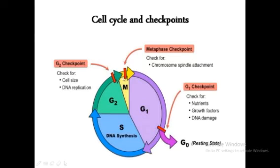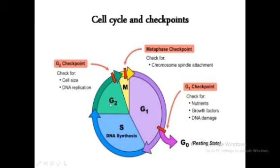From the picture, we can see that cell cycle seems like a continuous pathway, so anything can go wrong. There are some checkpoints that make sure there is no problem along the way. There are three checkpoints: the G1 checkpoint makes sure that the cell entering the cell cycle doesn't contain any tumor. The G2 checkpoint makes sure the cell entering M phase doesn't contain any damaged DNA. The metaphase checkpoint checks for chromosome spindle attachment.